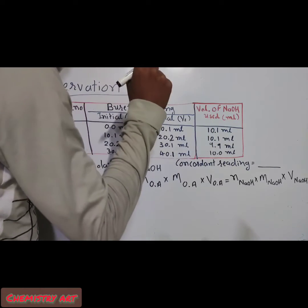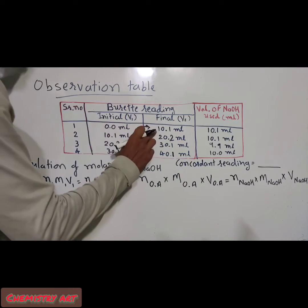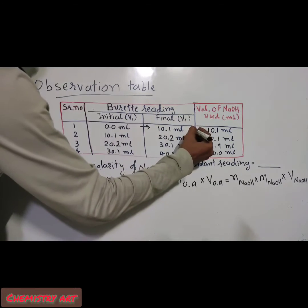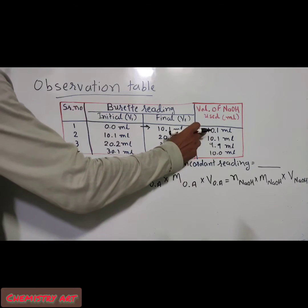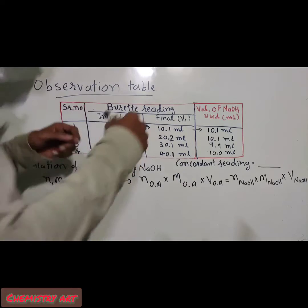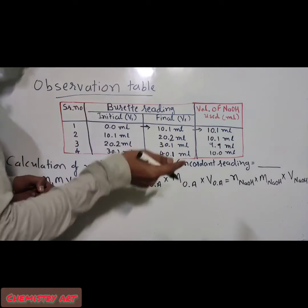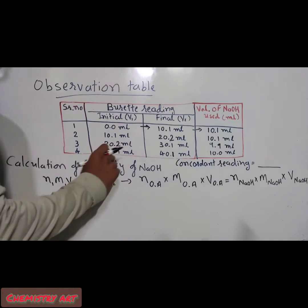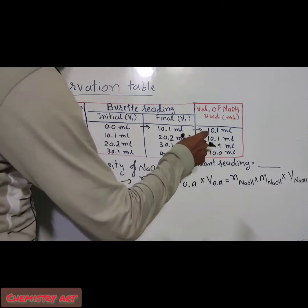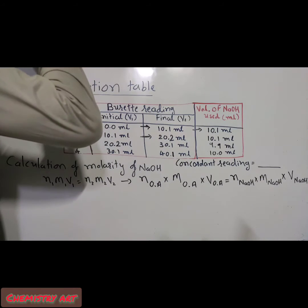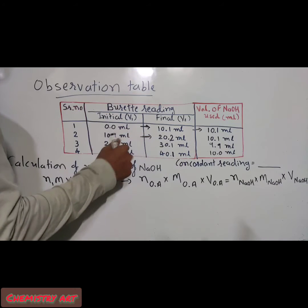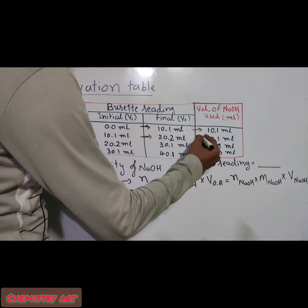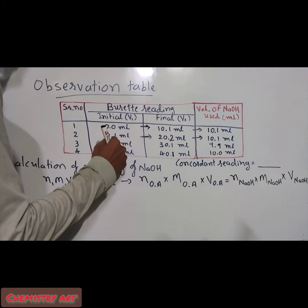The volume of NaOH used in the titration is the difference between the final and initial readings. Final reading was 10.1 ml and initial was 0.0 ml, so volume used in the first titration is 10.1 ml. For the second titration, the initial reading is 10.1 and the final reading came to 20.2 ml, so the difference is again 10.1 ml.